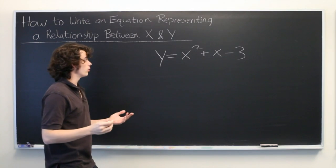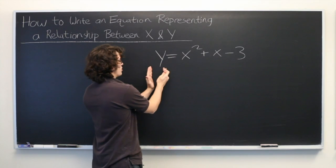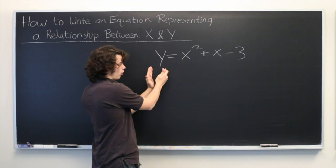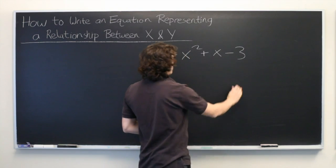Frequently, whenever it is possible, we try to write equations such as this so that we have our dependent variable on the left all by itself and then our independent variable and any constants on the right.